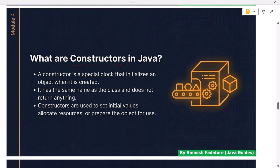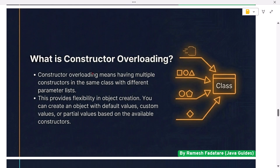What are constructors in Java? A constructor is a special block that initializes an object when it is created. It has the same name as the class and does not return anything. Constructors are used to set initial values, allocate resources, or prepare the object for use.